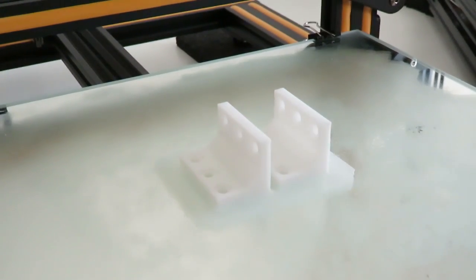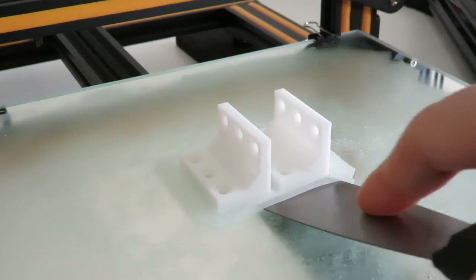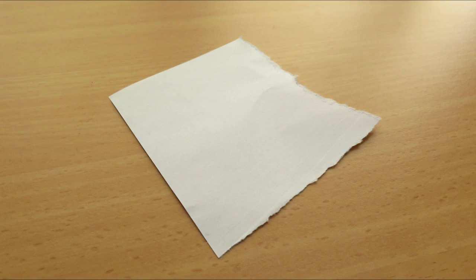With my method here, you're going to have such a strong print adhesion that the hardest part is actually getting the prints off the bed. All you're going to need to do this is a sheet of paper or a 0.18mm precision feeler gauge.